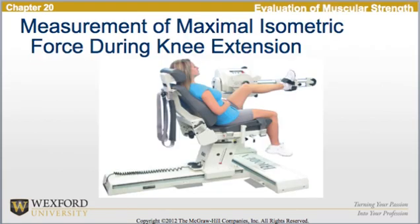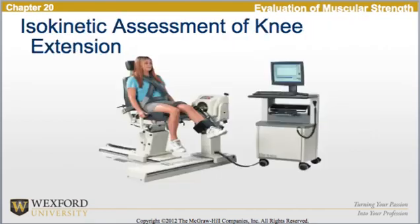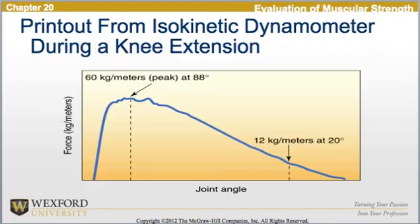Here is a diagram looking at the measurement of maximal isometric force during knee extension. Next, we see a hand-grip dynamometer to assess grip strength, and now we see an isokinetic assessment of the knee extension, along with the printout from an isokinetic dynamometer during a knee extension.